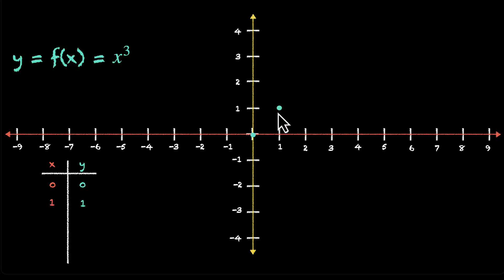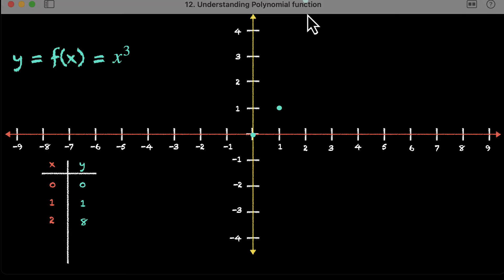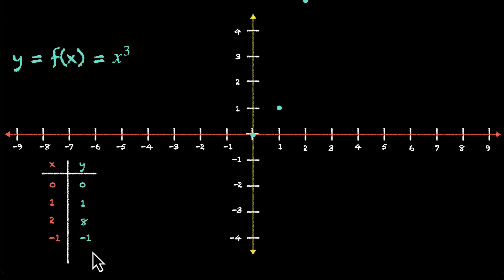For 1, you'll get 1. So 1, 1 is here. For 2, you'll get 8. So 2, 8 is here. We don't have space, so we'll just mark a point. For minus 1, we have minus 1. For minus 2, you have minus 8. Again, we'll draw some point here. And if you connect them, this is what you'll get. This is the graph of y equals to x cube.